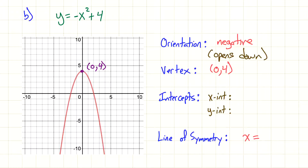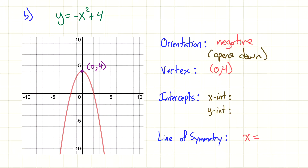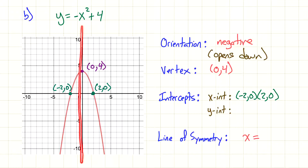For X-intercepts, looking at the X-axis, it does cross in two places. This looks like 2, 0 and negative 2, 0. For the Y-intercept, looking to see where it crosses the Y-axis, it also crosses at 0, 4. You'll notice the vertex and the Y-intercept are the same in this case — that's perfectly fine.